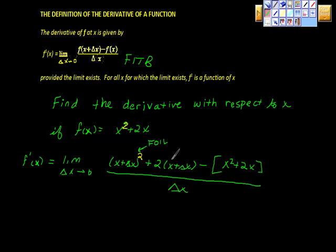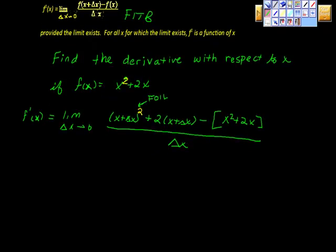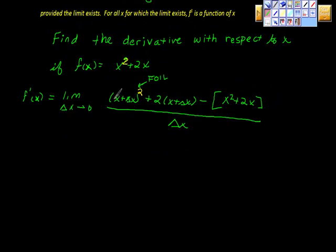So anyway, obviously we're going to distribute this to this, and this to this, and then this to this, and we're going to distribute this negative sign through this quantity over here. So if we did our binomial expansion here, (x + Δx)² is actually x² plus 2x(Δx) plus (Δx)².